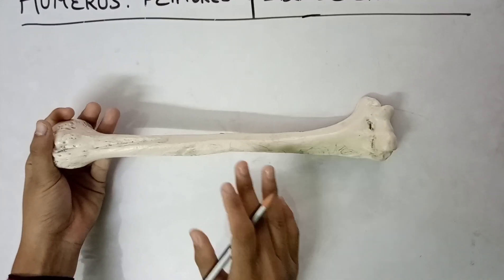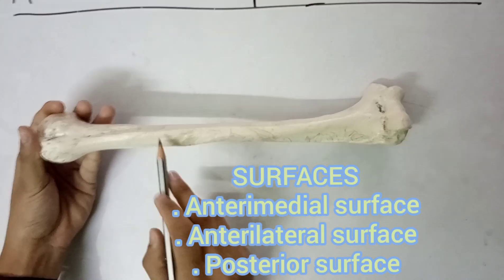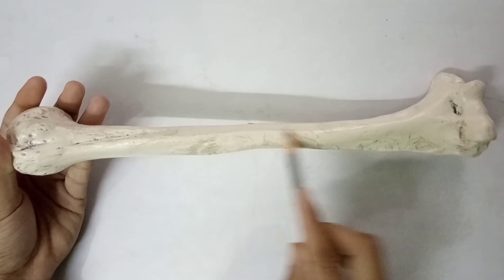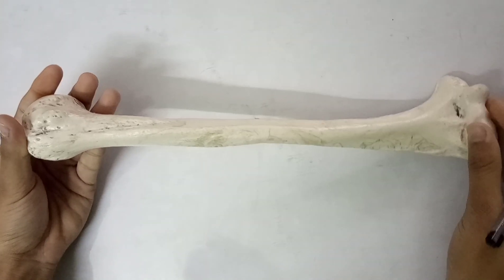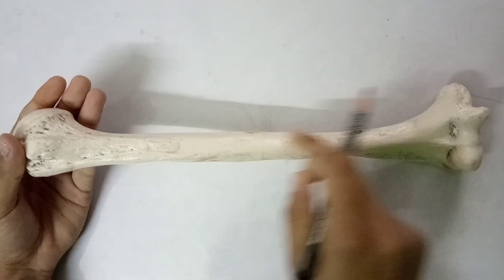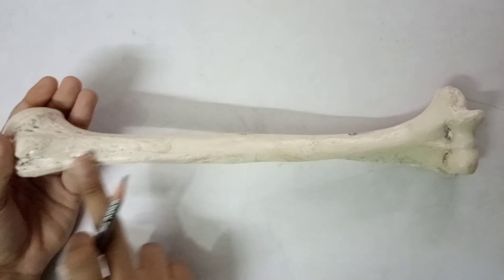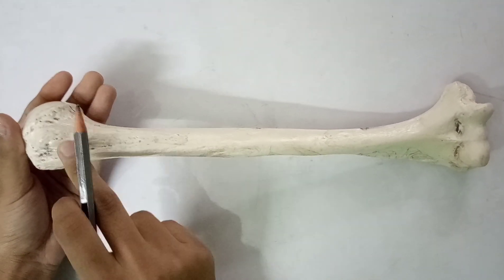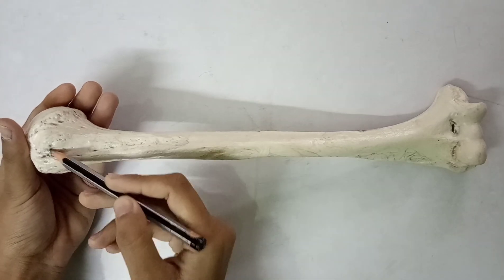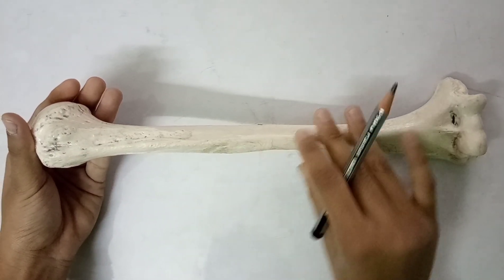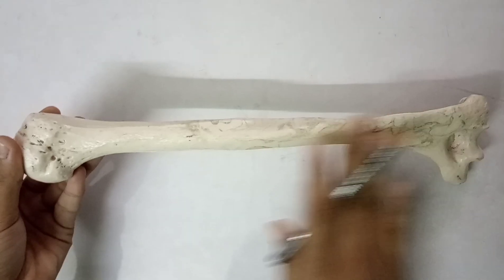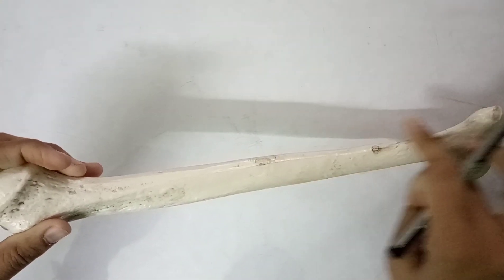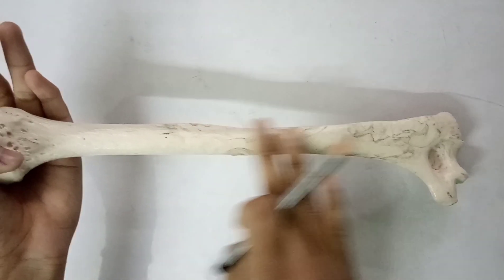Now let's talk about the surfaces of the shaft. The anterolateral surface is present between the anterior border and the lateral border. The anteromedial surface is present between the anterior border and the medial border, and it forms the floor of the intertubercular sulcus. The posterior surface is present between the lateral border and the medial border.